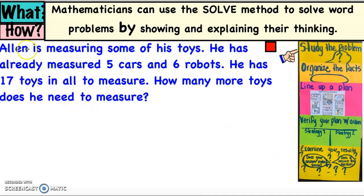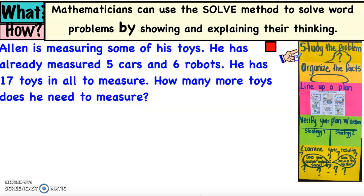Let's start by reading our problem. Join me in the reading: Alan is measuring some of his toys. He has already measured five cars and six robots. He has 17 toys in all to measure. How many more toys does he need to measure?